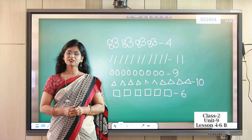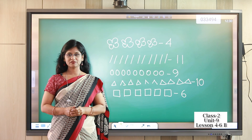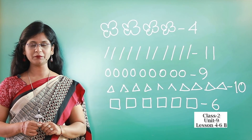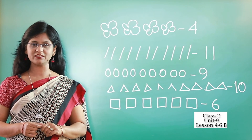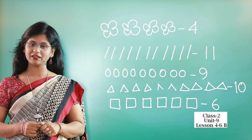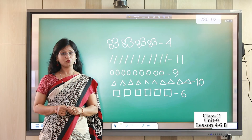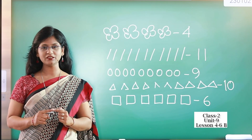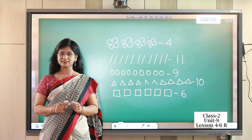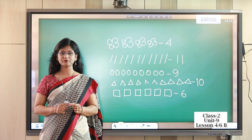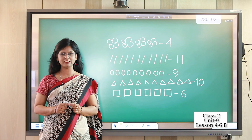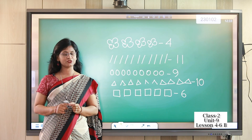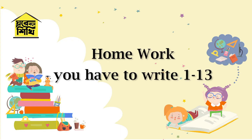Let's revise the whole thing we did today. First we counted numbers from 1 to 13. Then we drew our zip and colored it. After that we counted numbers and wrote them in our notebook. Your homework is to write 1 to 13 in your notebook and draw 13 pictures of anything — flowers, ants, homes, trees, whatever you like.